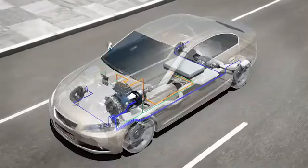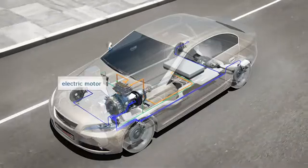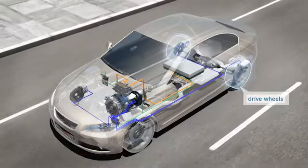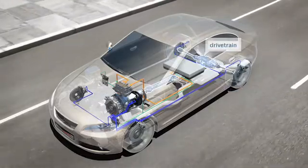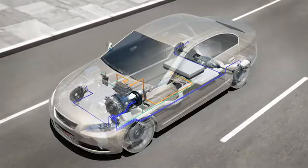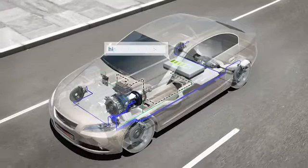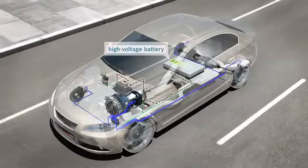When the driver steps on the brake, the vehicle's electric motor switches to generator mode. The wheels transfer the kinetic energy via the drive train to the generator. Through its rotation, the generator converts a portion of the kinetic energy into electrical energy. This energy is stored in a high-voltage battery.